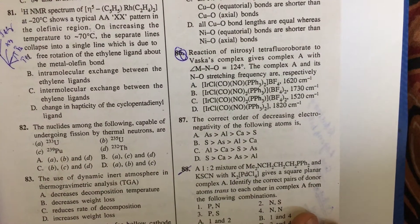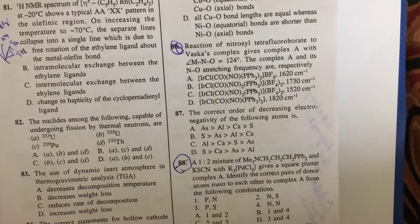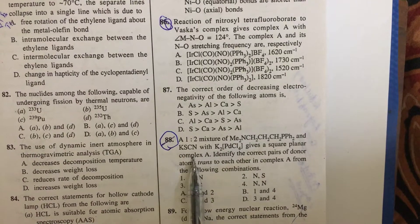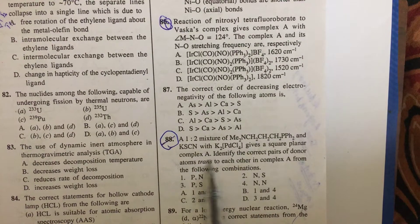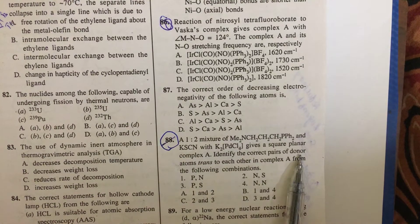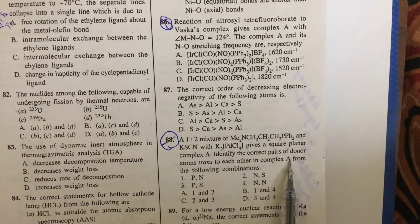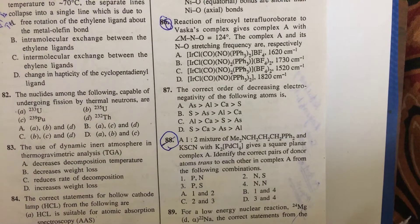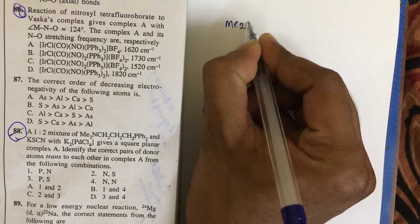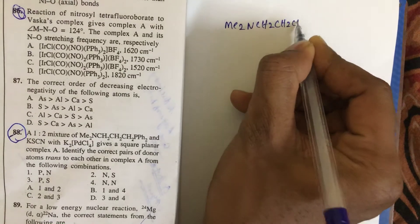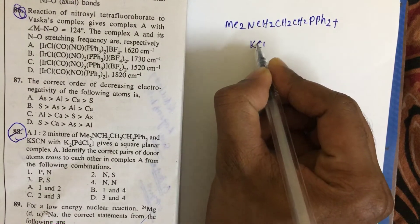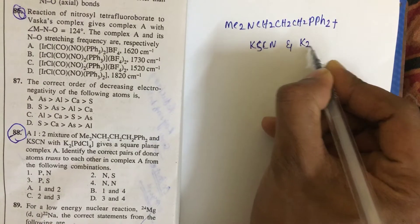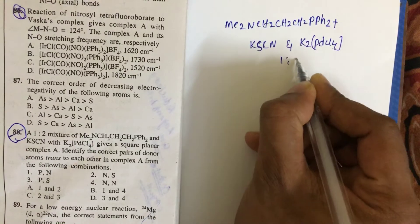We are going to solve some CSR questions. The first question involves a mixture of a complex with K₂SCN and K₂PdCl₄ in a 1:2 ratio, giving a square planar complex. We need to identify the correct pairs of donor atoms trans to each other. The complex involves Me₂N-CH₂CH₂CH₂-PPh₂.